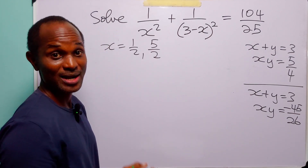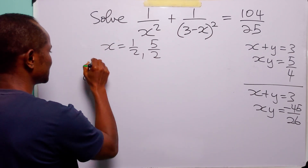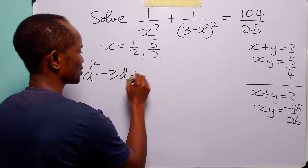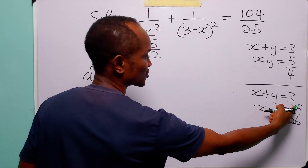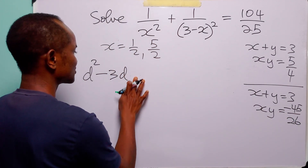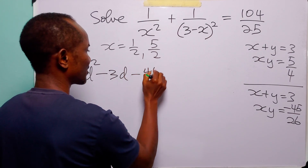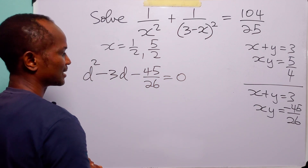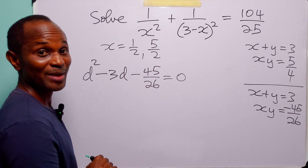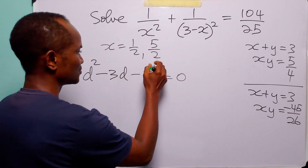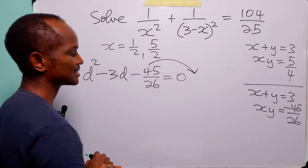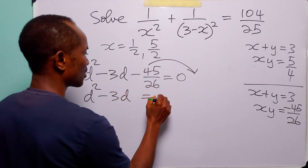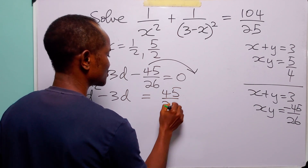For the second case, we do exactly the same thing. We have d squared minus 3d plus (minus 45 over 26) equals 0, that is d squared minus 3d minus 45 over 26 equals 0. We cannot factorize this, so let us solve by completing the square. The first thing we do is move the constant term to the right-hand side, giving d squared minus 3d equals 45 over 26.